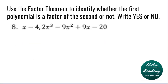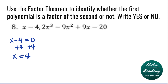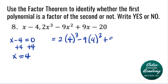Question 8: x minus 4 and 2x cubed minus 9x squared plus 9x minus 20. Solve for x using x minus 4 equals 0. Adding 4 to both sides, our x value is equal to 4. Using the factor theorem, we will plug in 4 into our second polynomial. We have 2 times 4 to the third minus 9 times 4 squared plus 9 times 4 minus 20. If the answer is 0, that means x minus 4 is a factor.